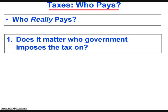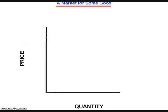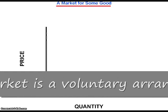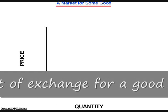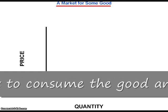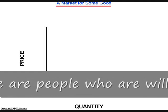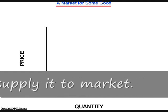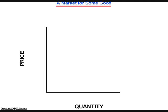Let's begin by briefly discussing the basic elements of a market for a hypothetical good. Economists define a market for a good as a voluntary arrangement of exchange in which demanders want to consume a good and suppliers meet that demand by supplying the good to market. Economists graphically depict the relationship between the price of a good along the vertical axis and the quantity demanded and quantity supplied of a good along the horizontal axis.